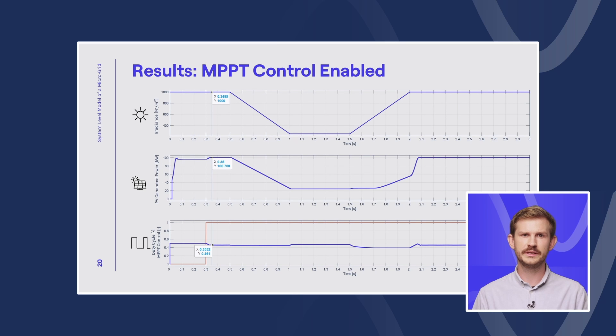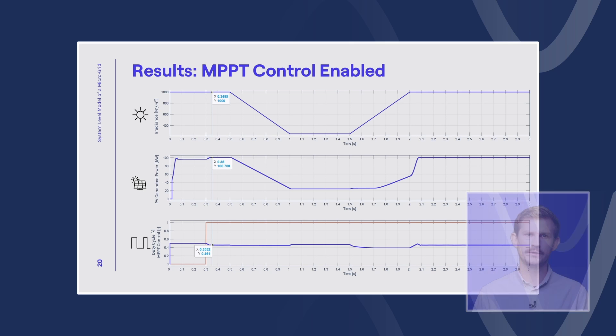But once we enable our MPPT control, we can experience the control of the duty cycle, and we can see that we are able to raise the output power of the PV array to 100.7 kW. This is more than a 4% of gain, which is significant if we consider the fact that we are able to reach this only with an efficient control of our boost converter.